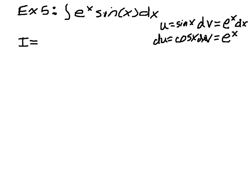So I get that my original integral, which I'm calling i, equals i, is e to the x sine of x, minus the integral of e to the x, cosine of x, dx.